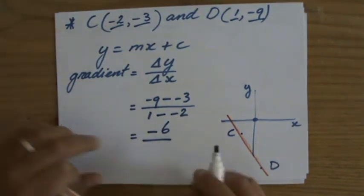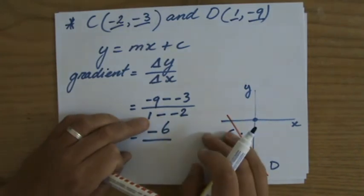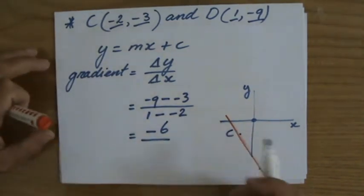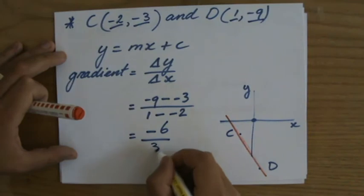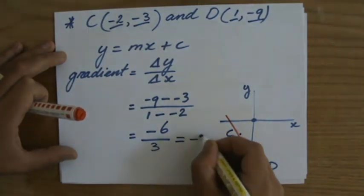Divided by, 1 minus -2, that's 1 plus 2, that's 3. And -6 divided by 3, that is -2.